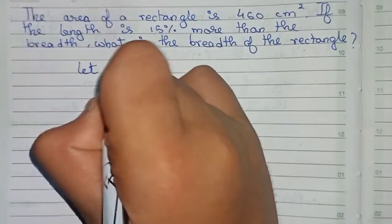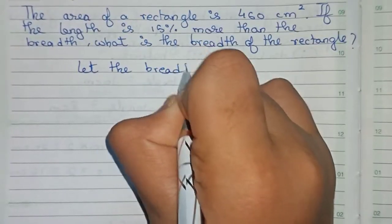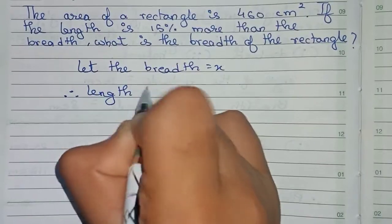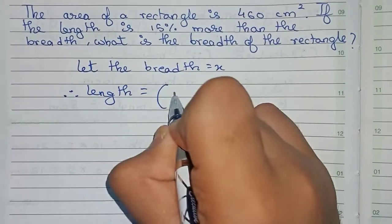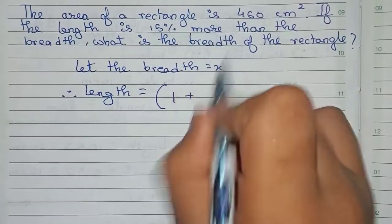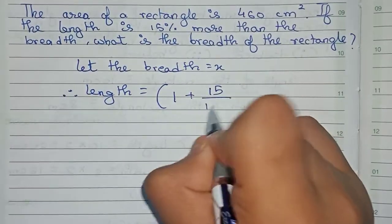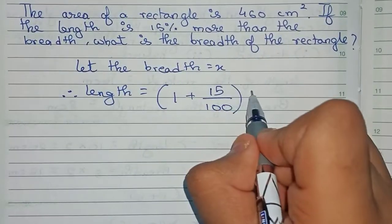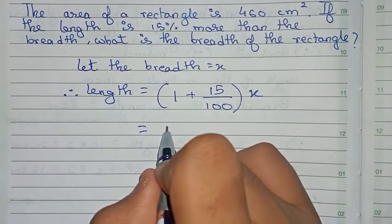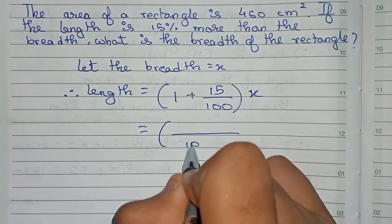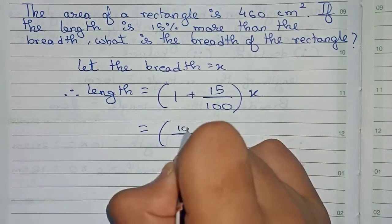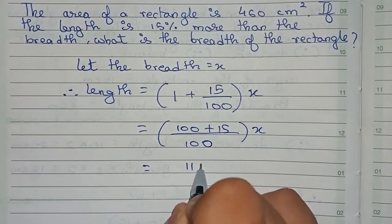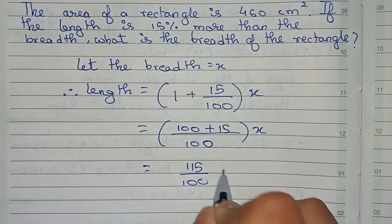First, we let the breadth equal x. So therefore, now we find the length. Length equals — taking the whole amount as one, and the length is 15 percent more, that means plus 15 by 100 of x, which is of breadth. So it becomes 100 plus 15 x over 100, which equals 115 by 100 times x.